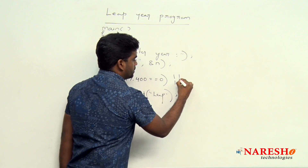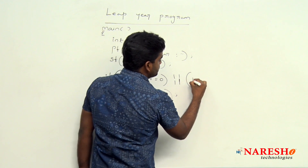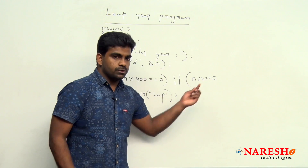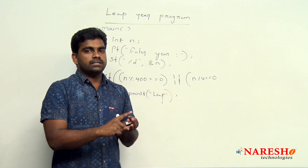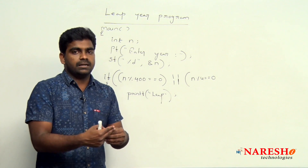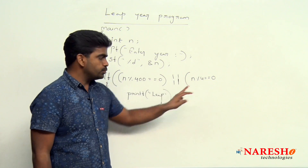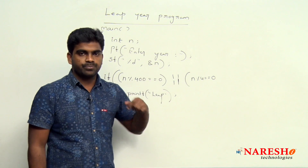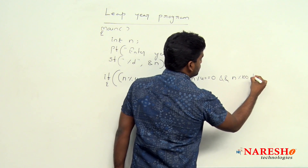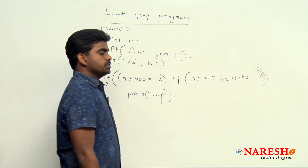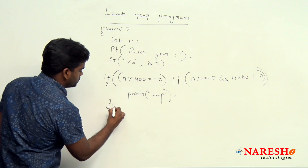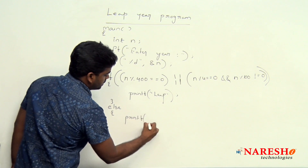The next option: suppose n % 4 == 0 — this applies for 4, 8, 12, 16, 96, and also 100. But if input is 100, then 100 % 4 == 0 is true, and it would incorrectly give leap year — so we need to control that. How? We also require n % 100 != 0. If this combined condition fails, we directly printf "it is not a leap year."